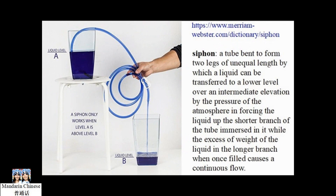Both the Pythagorean cup and the Chinese Justice Cup are examples of a siphon. A siphon is a tube running from one container to another that uses gravity to cause liquid to flow. The key is that the container with the liquid has to be at a higher level than the container you're moving the liquid to.